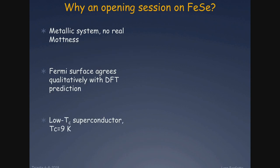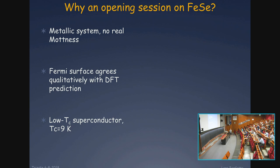The first point I would like to convince you of is that it was a good idea to start this workshop with a session on iron selenium. Even if not everybody here lives and breathes iron selenium, this is a nice system. It belongs to the family of iron-based superconductors, which are actually not particularly correlated materials — these are metallic systems. There are correlations, but we are really far from the strongly correlated materials we see in other systems like heavy fermions or cuprates.